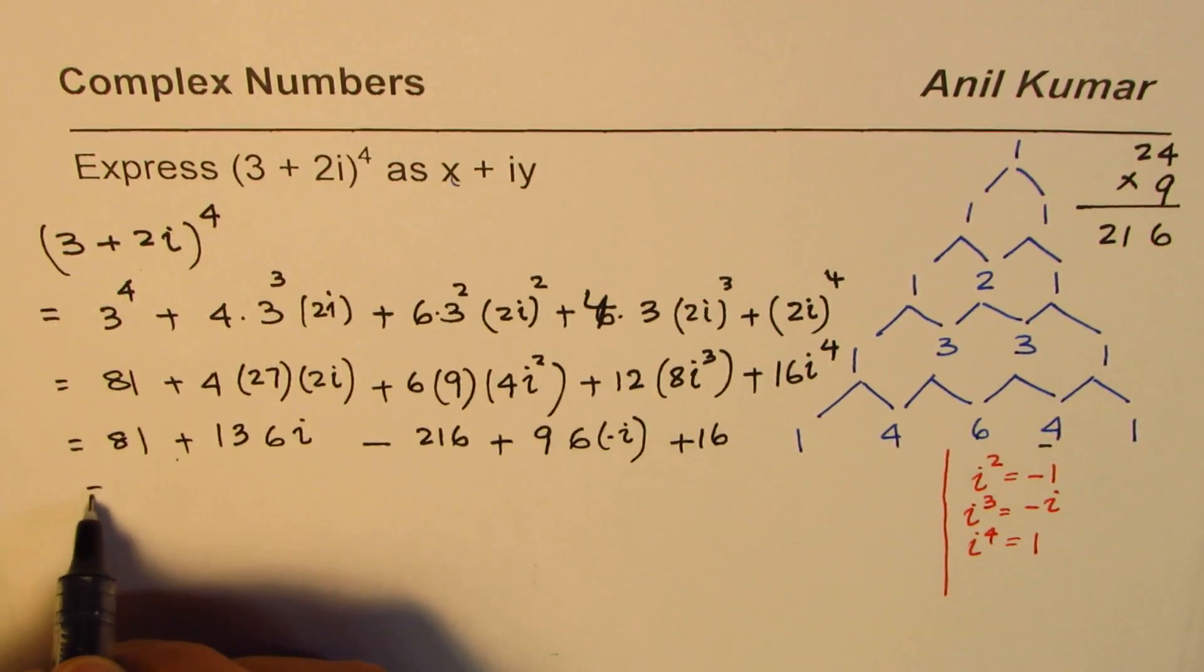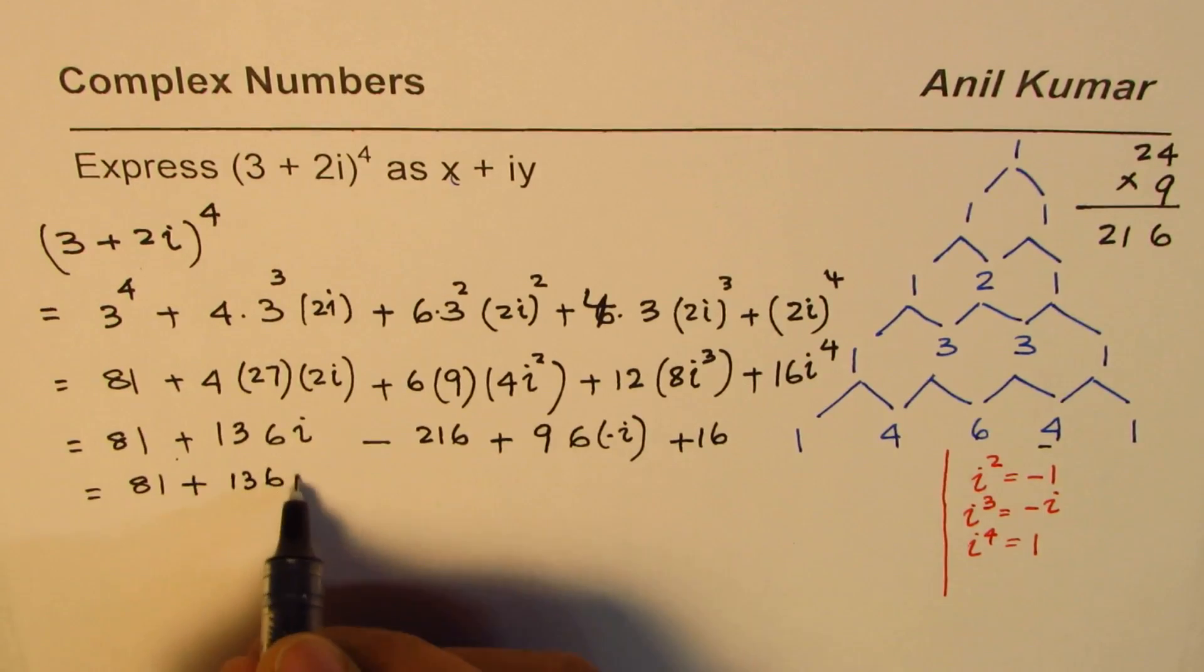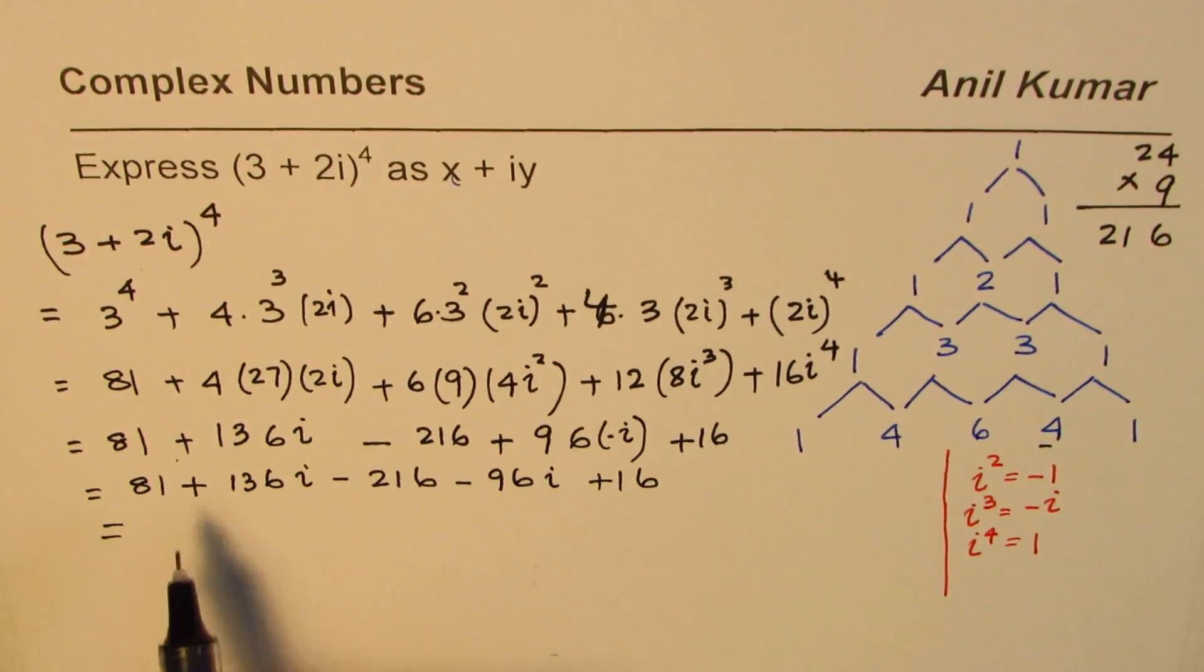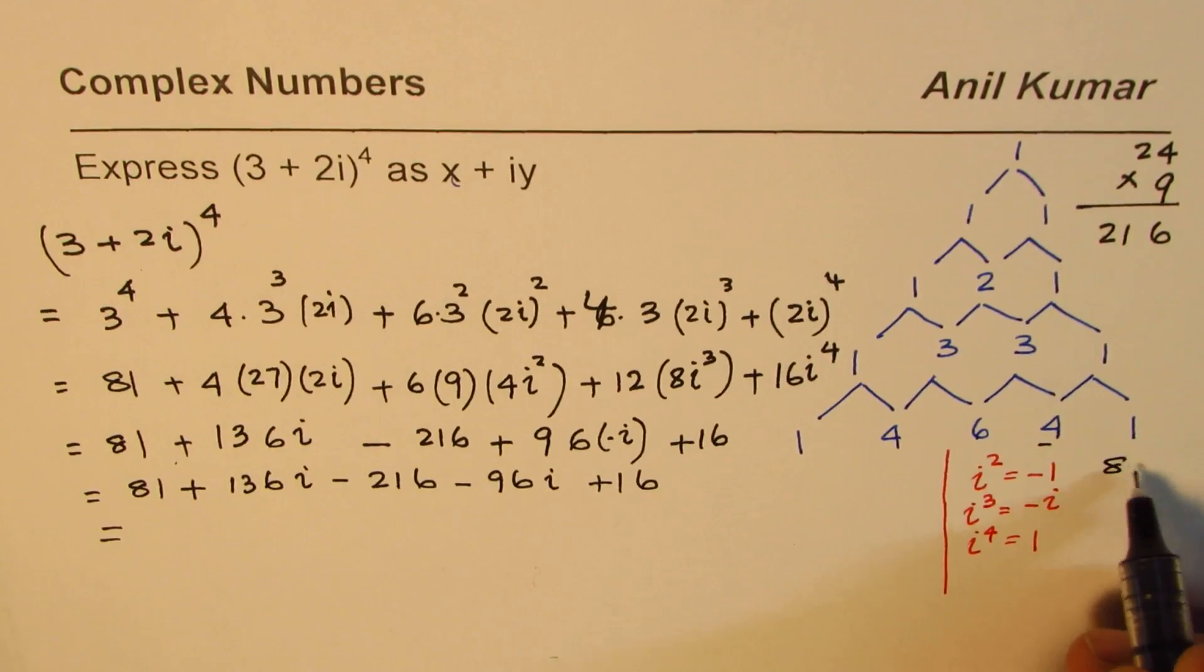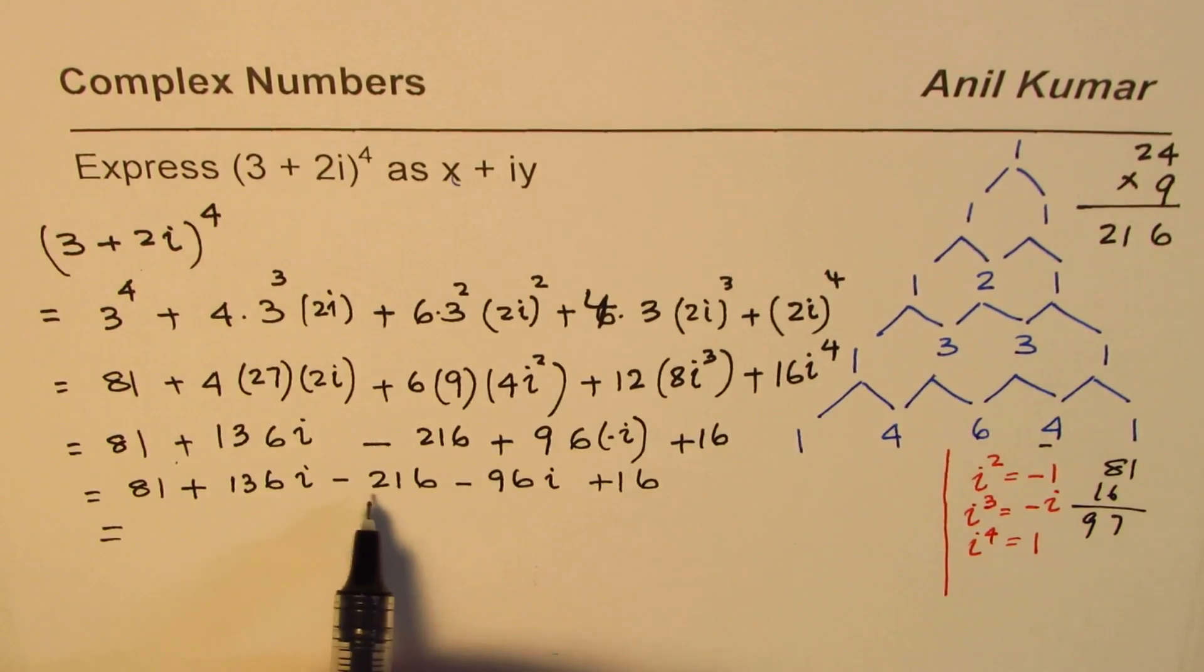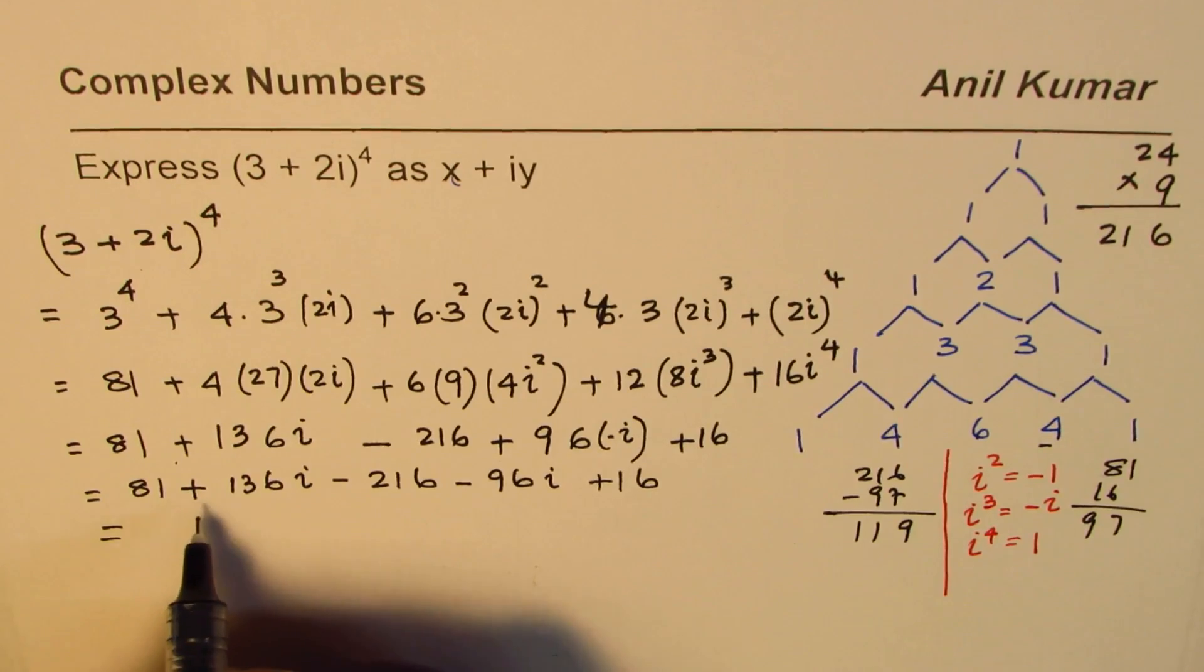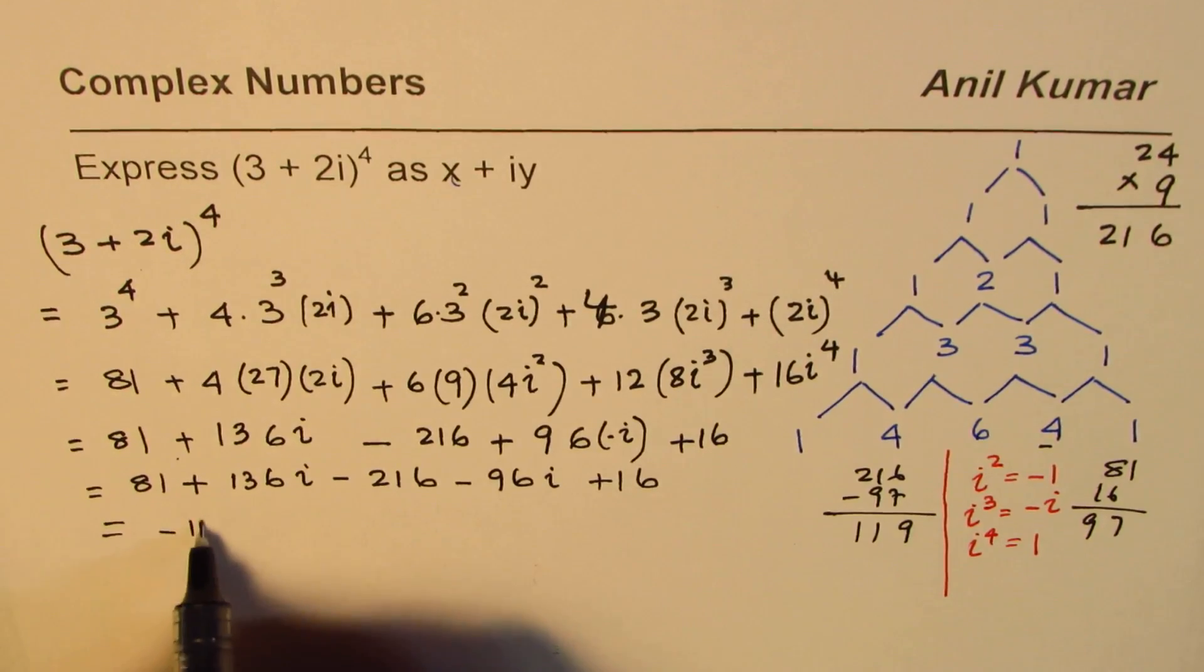So we have 81 plus 216i minus 216, here we have minus 96i plus 16. So we can combine the numbers and the imaginary parts. We have 81 plus 16 which is 97. We'll take away 97 from 216. We have 216 take away 97, so that gives us 119. So we get here minus - this is negative number - so we did kind of reverse, minus 119.